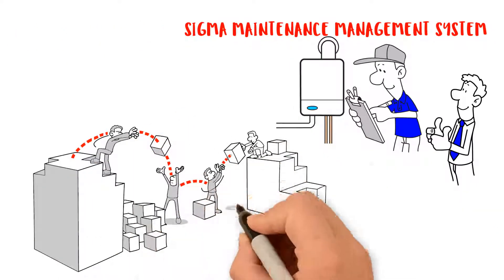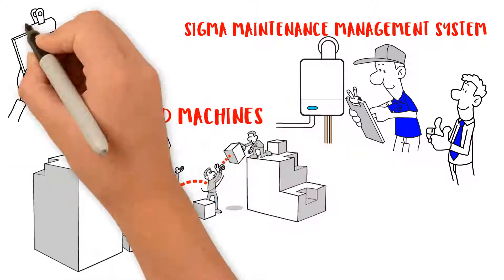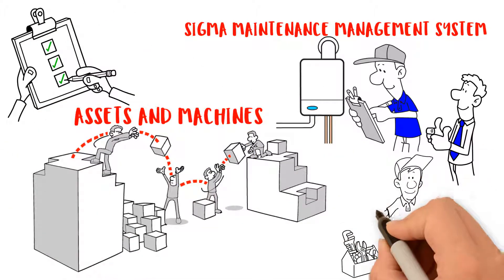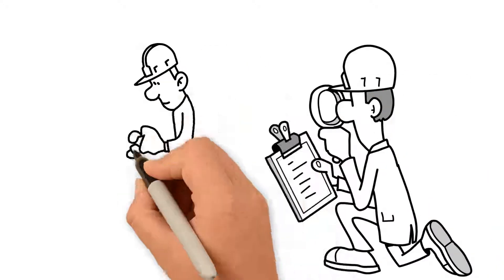With Sigma, you can store all your assets and machines in one place. Keep track and schedule maintenance or other work to be done. Store history of work carried out on your machinery.